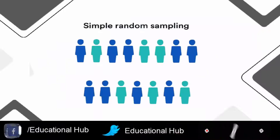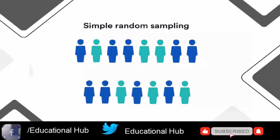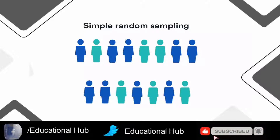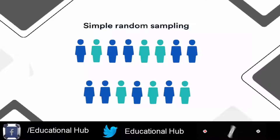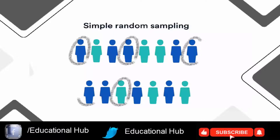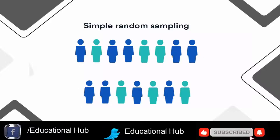2. Systematic sampling. Systematic sampling is similar to simple random sampling, but it is usually slightly easier to conduct. Every member of the population is listed with a number, but instead of randomly generating numbers, individuals are chosen at regular intervals.